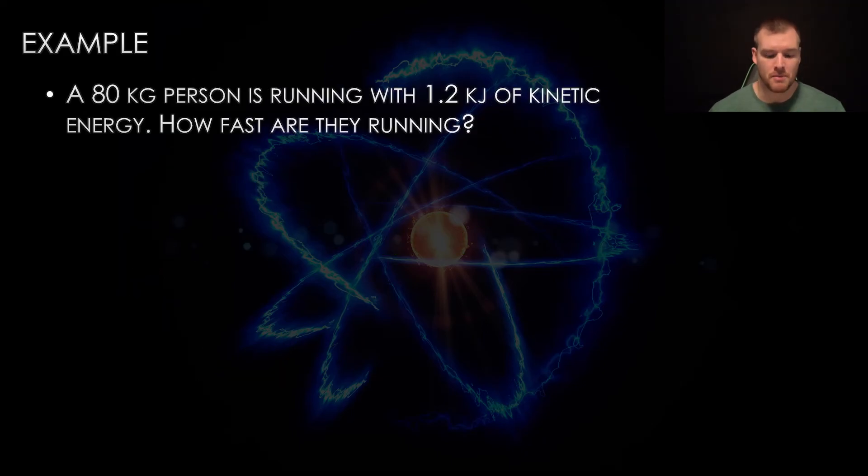Now let's look at one that's a little bit more complex. An 80 kilogram person is running with 1.2 kilojoules of kinetic energy. How fast are they running? We're talking about kinetic energy, so EK equals half MV squared. But this one is not asking for kinetic energy, it's asking for velocity. So now we have to do some rearranging of this equation.